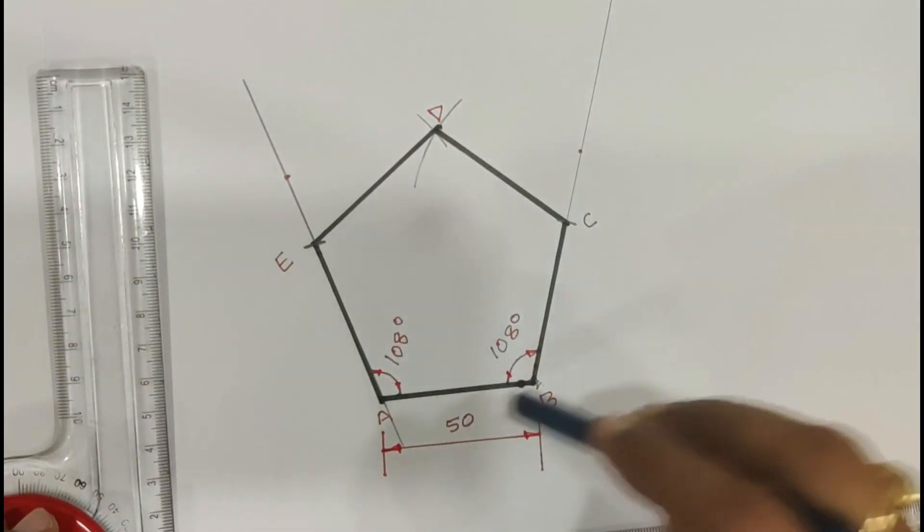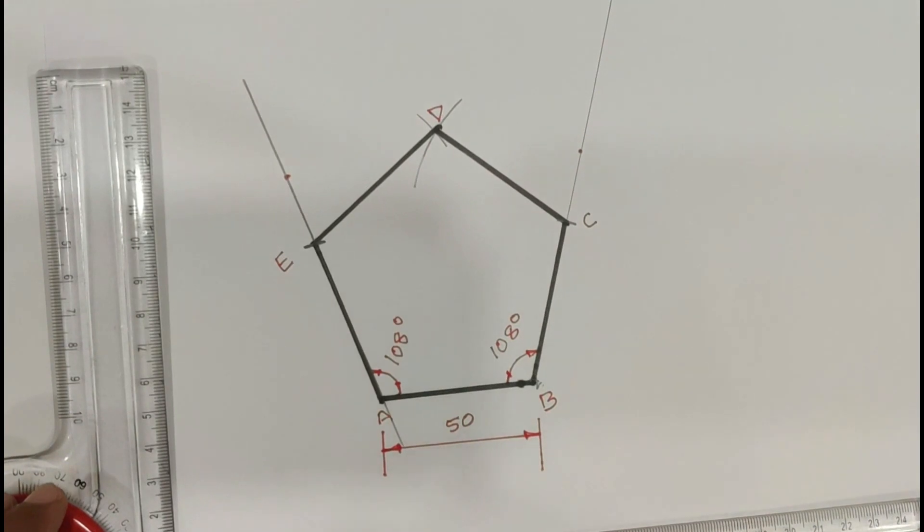Dark lines are with H pencil. Remaining lines with H pencil. Dimensioning also with 2H pencil.